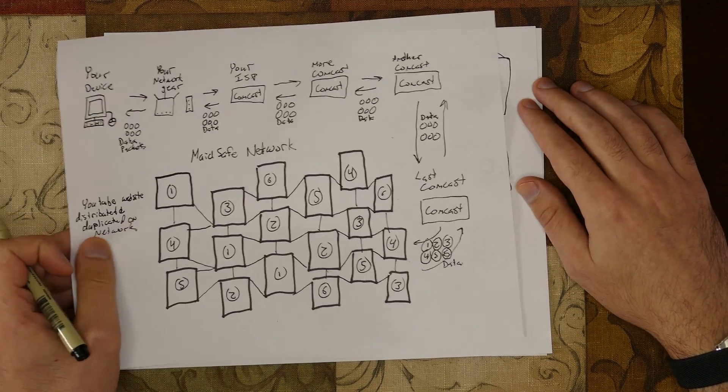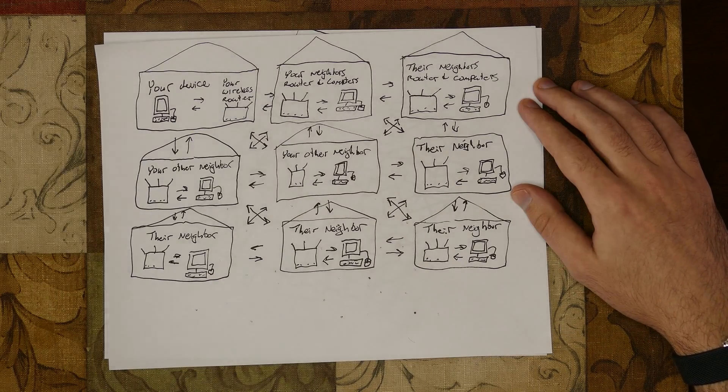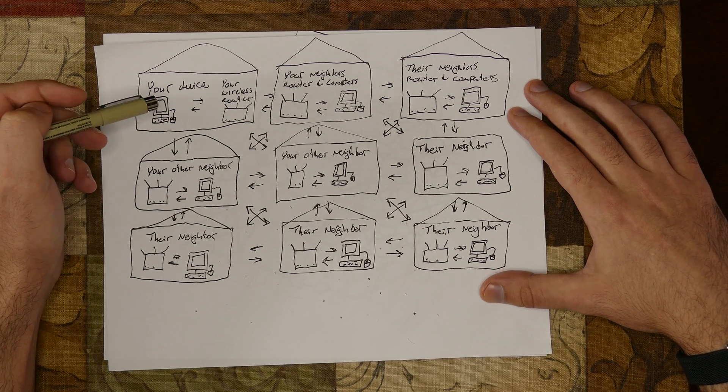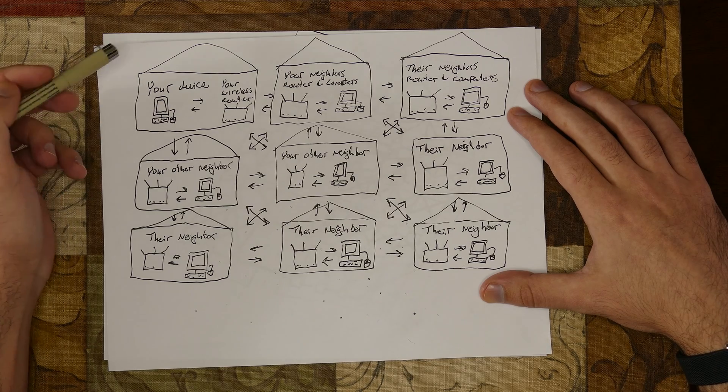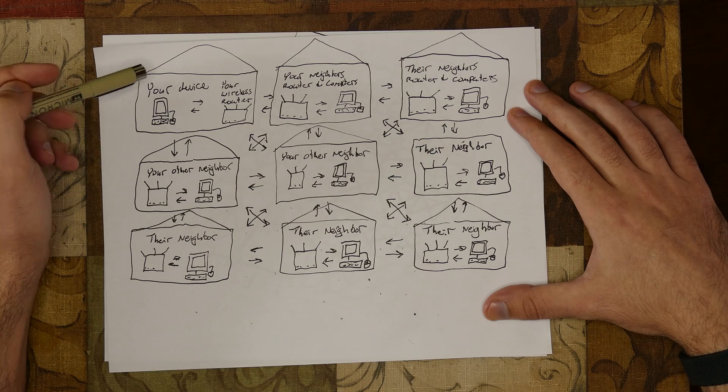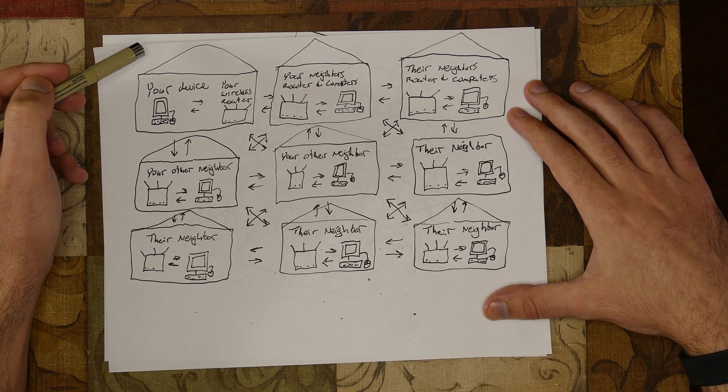The solution to the ISP problem is a mesh network. However, this adds even more complexity to the MadeSafe vision of a fully distributed and decentralized internet. Let me explain. A true mesh network looks like the MadeSafe network. However, there is no ISP involved.